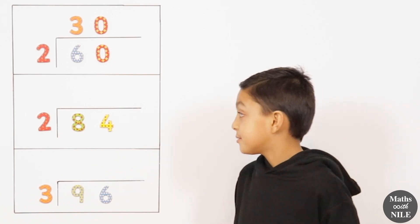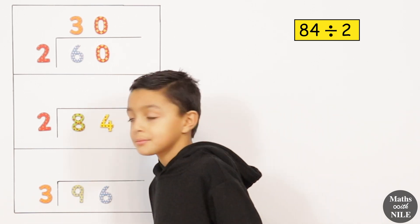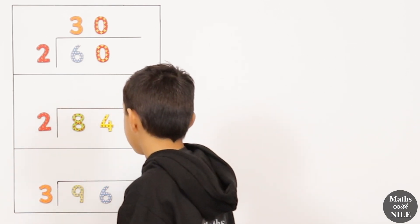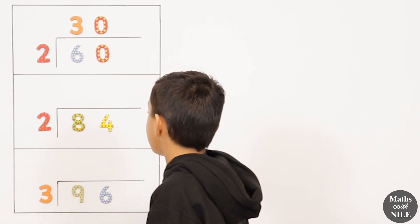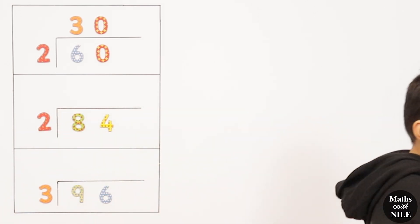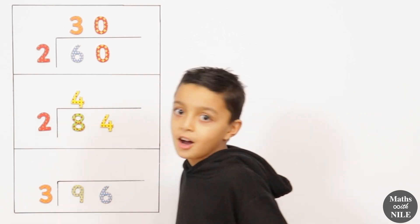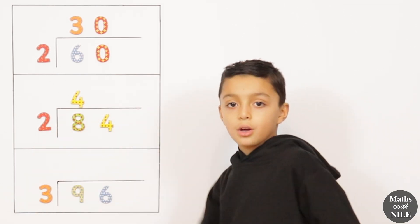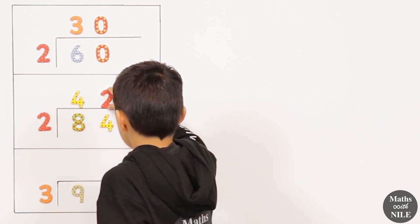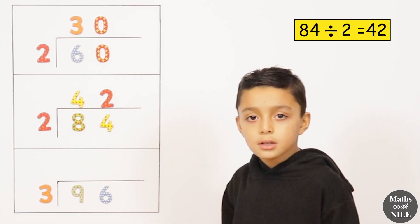The next question is 84 divided by 2. The number inside is being divided, and the number outside is what we're dividing by. So we do 8 divided by 2, which equals 4, and we put the 4 on top of the 8, on top of the line. Then we do 4 divided by 2, which equals 2, so we put our 2 there. That means 84 divided by 2 equals 42.